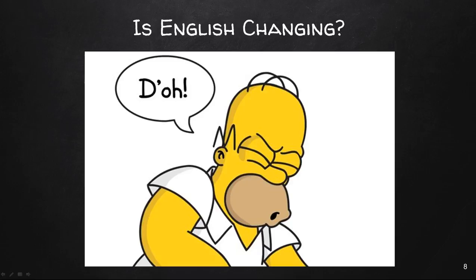Many of the changes that occur in language begin with teens and young adults. As young people interact with their own age group, their language grows to include words, phrases, and constructions different from the older generation. Some have a short lifespan — when was the last time you heard 'groovy'? It's probably been a while. People tend to think that older forms of language are more elegant, logical, or 'correct' than modern forms, but that's just not true. The fact that language is always changing doesn't mean it's getting worse — it's just becoming different.